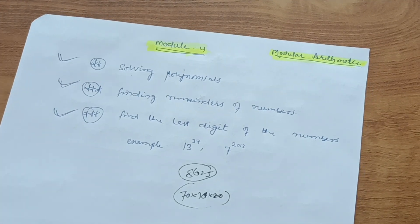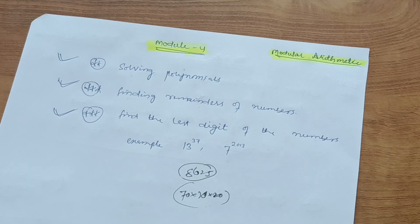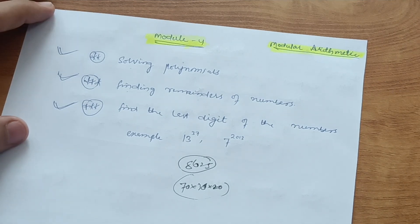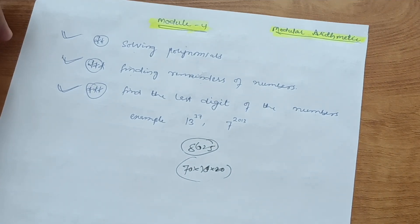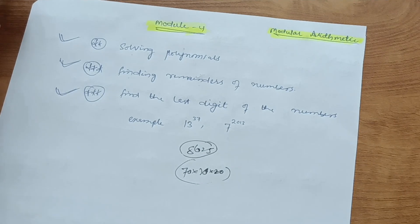This much content is enough to pass this module. If you want to refer to notes — since 22 scheme notes have limited availability — you can go through 18 scheme notes, as four modules are the same. Go through those notes and try out the problems so that you can easily clear this subject. Thanks for watching. Do subscribe to my channel if you are new, and share this video with your batchmates so they can benefit too.